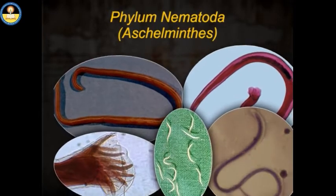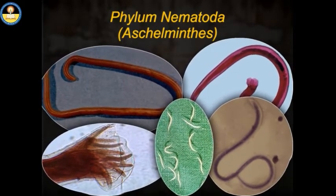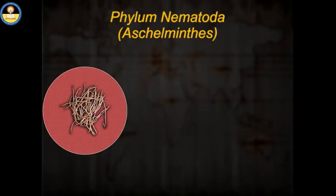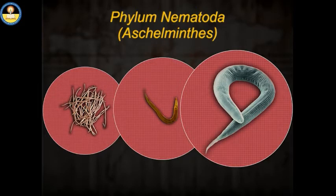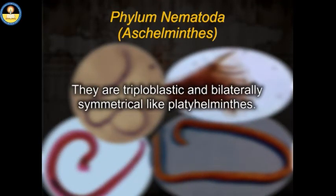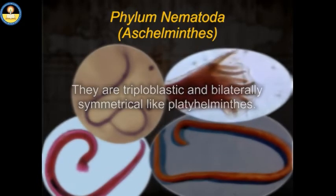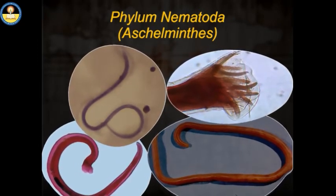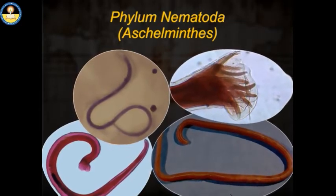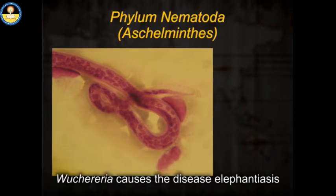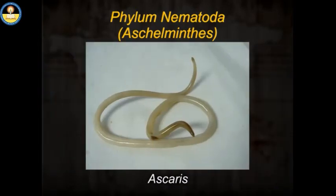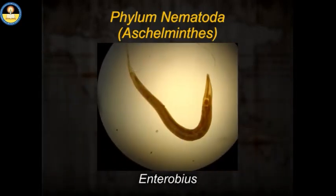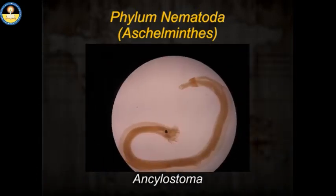Phylum Nematoda — roundworms. The body size of nematodes varies from microscopic to quite large forms that are elongated and cylindrical. The body cavity is a pseudocoelom. They are triploblastic and bilaterally symmetrical like Platyhelminthes. The body is covered with an elastic cuticle and they are mostly parasitic. For example, Wuchereria causes the disease elephantiasis in man. Other nematodes include Ascaris (roundworm), Enterobius (pinworm), and Ancylostoma (hookworm).